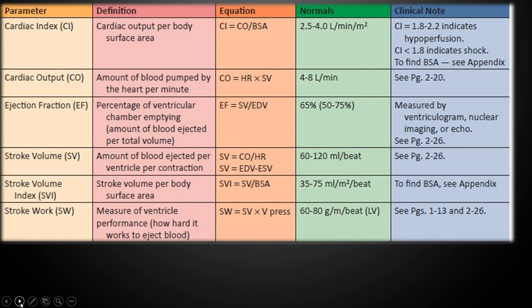Let's talk about some of the parameters we're going to use when looking at a patient with a Swan-Ganz in place — the numbers we collect to determine what's going on and the best treatment plan. Cardiac output is the amount of blood pumped by the heart per minute; the equation is simply heart rate times stroke volume, with a normal value of 4 to 8 liters per minute. The problem with just following cardiac output is that it isn't normalized for body size, so we have a parameter called the cardiac index that normalizes for body weight — it's cardiac output per body surface area.